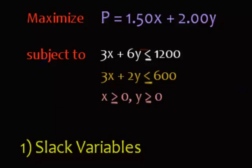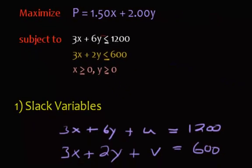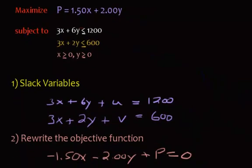Welcome to part two on the simplex method. So far we've started the table. We have an objective function — maximize 1.5x and 2y — and some constraints. We've talked about the slack variables, and here is our table. This is called a standard max problem: you're maximizing an objective function, all variables are non-negative, and your inequalities have less-than-or-equal-to signs. So let's go ahead and start solving.